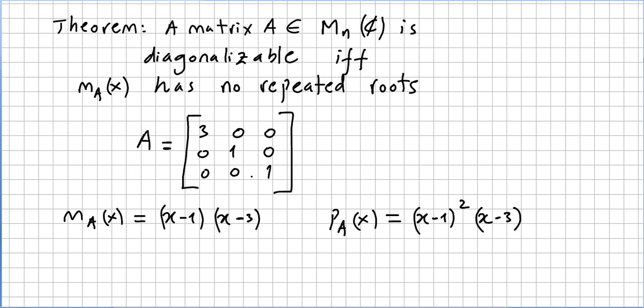I usually use lambda here, but I use x. So the minimal polynomial has no repeated roots, right? Since the minimal polynomial has no repeated roots, A is diagonalizable.